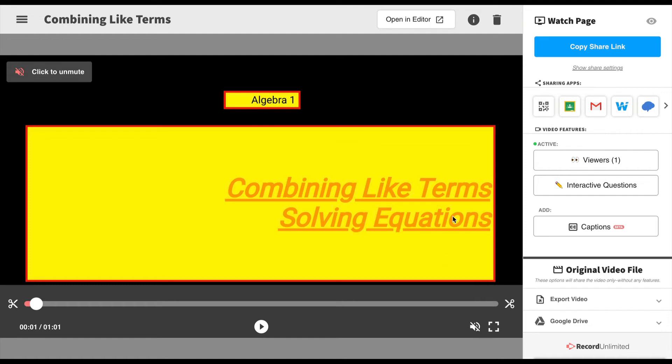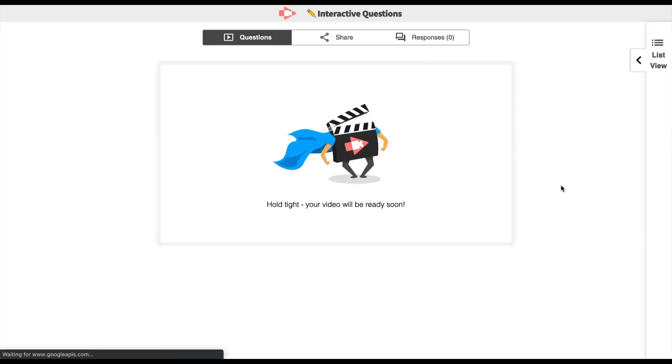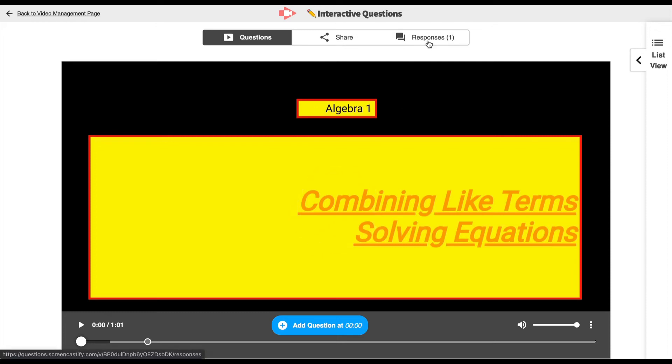In addition to seeing viewer analytics, you'll also be able to see any of the data from the questions that they've answered in real time, by selecting interactive questions and then moving over to responses. The scores that you see will be based off of the entire video and show how your entire class has performed. You'll also be able to see data for each individual student, and even data based off of each of the questions that you have added.